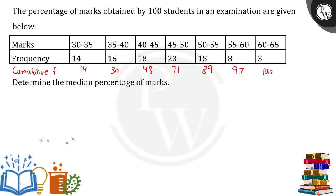Now, what is the formula for median? Median is stated as: l + [(n/2 − cf) / f] × h. Here, n is the number of observations; h is the class size (for example, 5); cf is the cumulative frequency of the class preceding the median class; and f is the frequency of the median class.